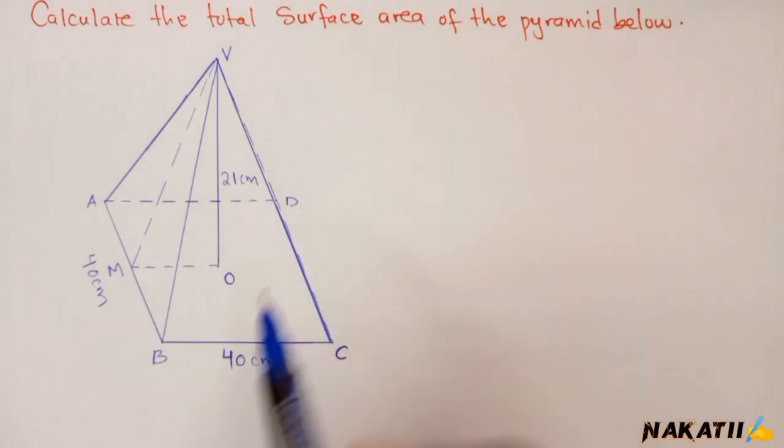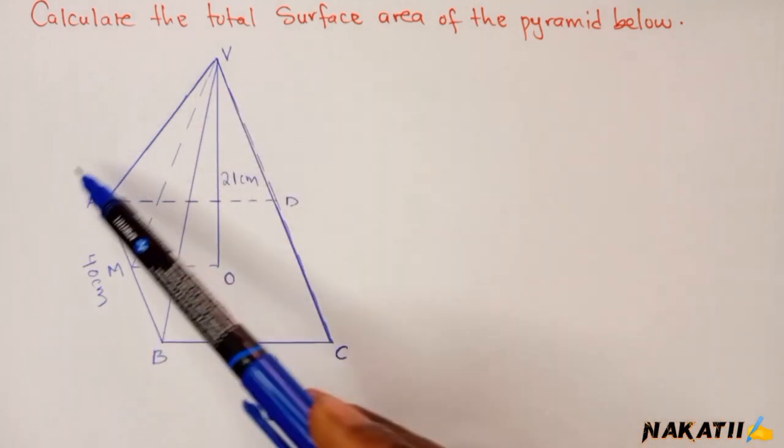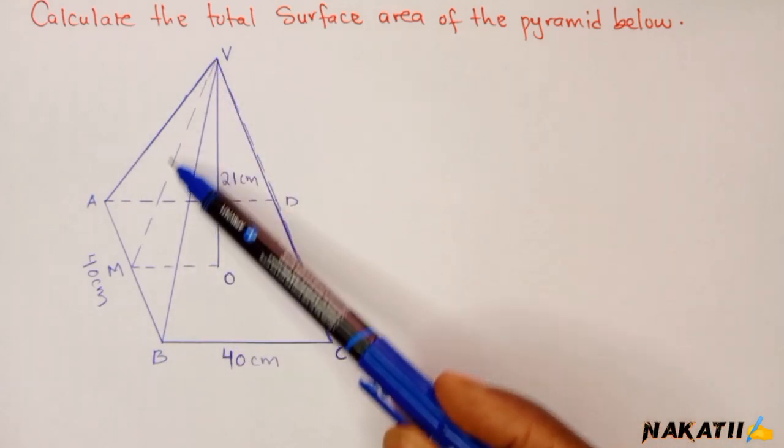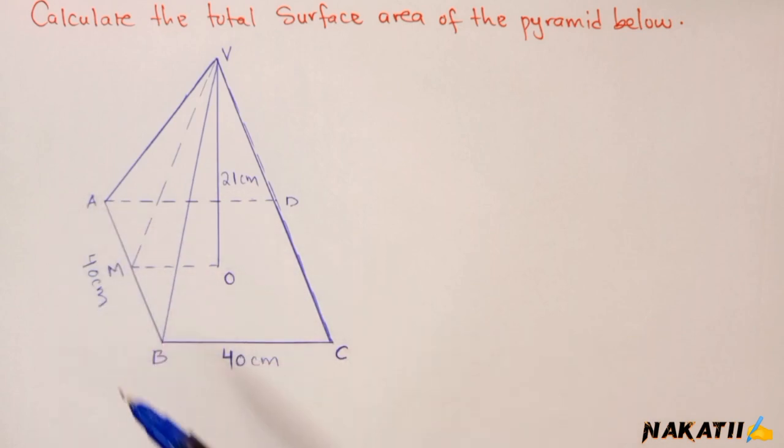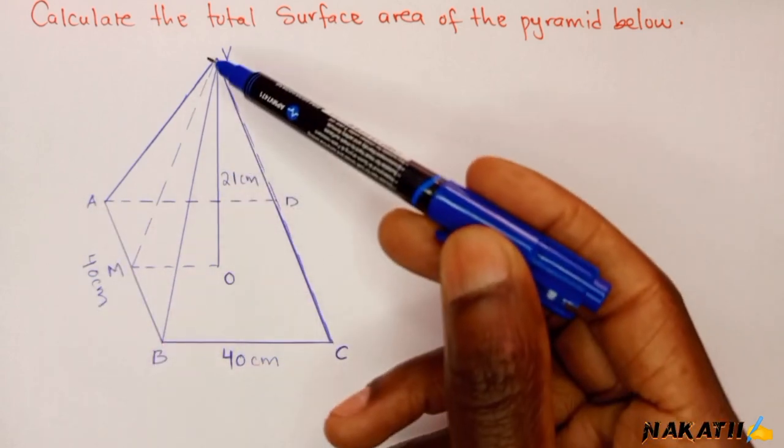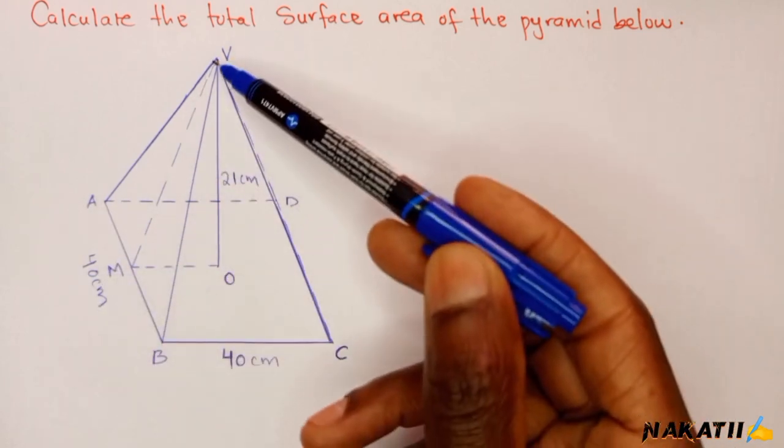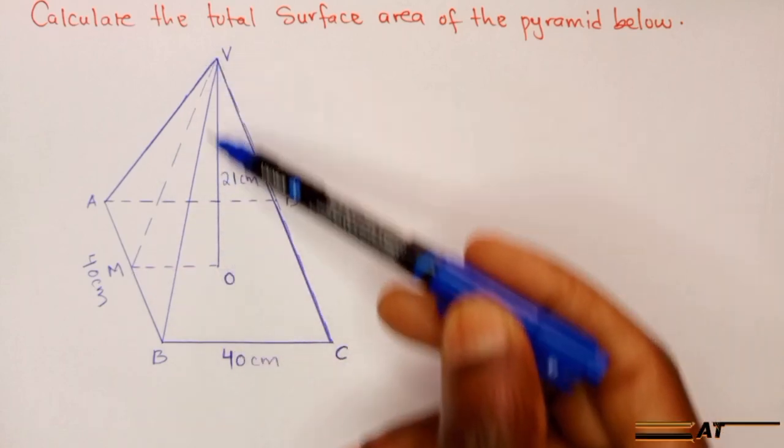To get the area of this, you just need to get this length which is the height of this triangle. You can use this right angle triangle.